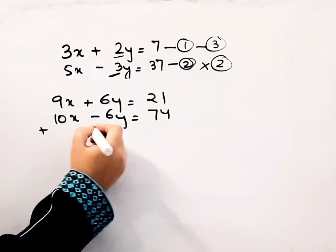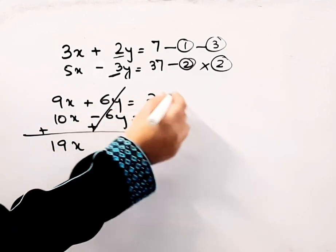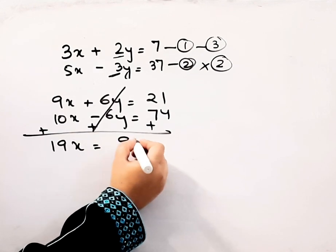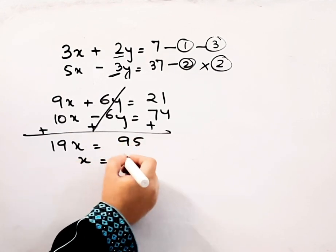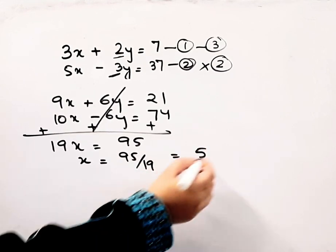I will add these two equations. This will become 19x. This will be cancelled out. This will be 95. From here we get x equals 95 by 19, x equals 5.